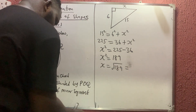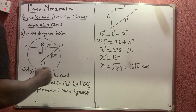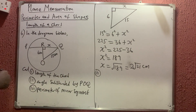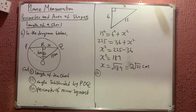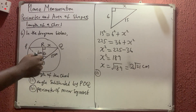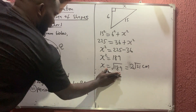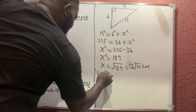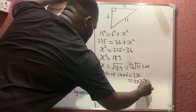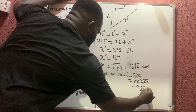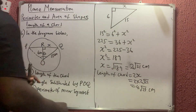Therefore x = √189. For part (ii), the angle subtended, we join the sides to form angle theta. We first get the full length of the chord: length of chord = 2x = 2√189 = 2 × √(9×21) = 2 × 3√21 = 6√21 cm. So the length of the chord is 6√21 cm.